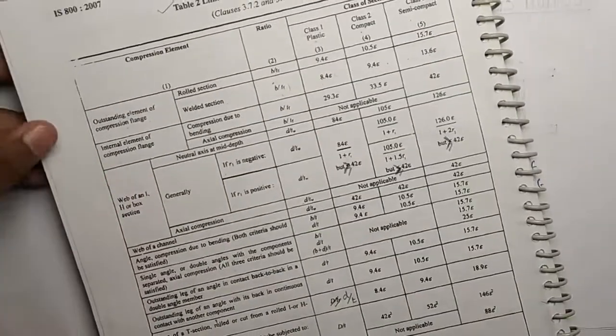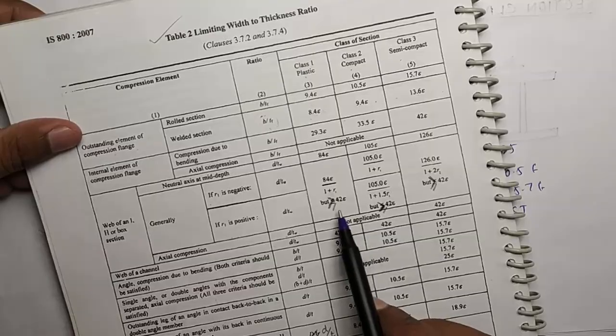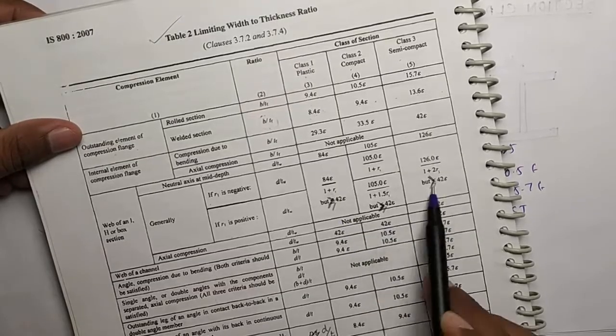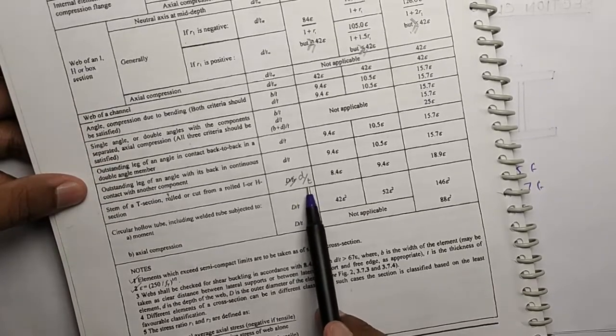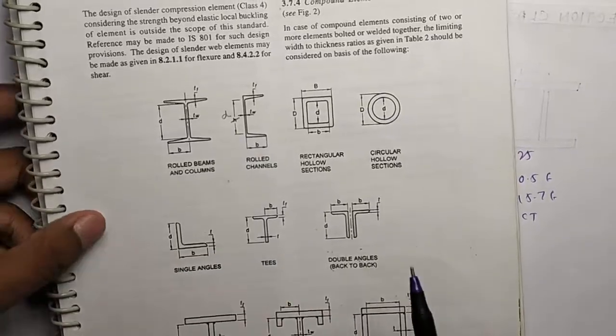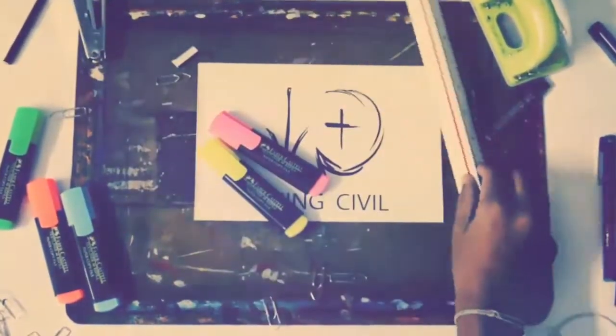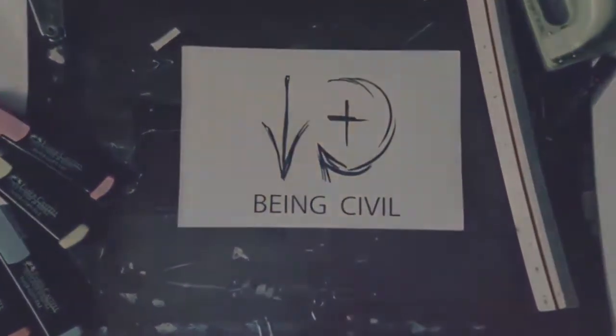And kindly note that in table 2 there are some erroneous data. Kindly rectify this in your code. This all three will be greater than equal to 42 epsilon. And here it will be D by TW, and here it will be D. So hope you like this video. Share with your friends. Keep the comment in the comment section below. See you in the next video.